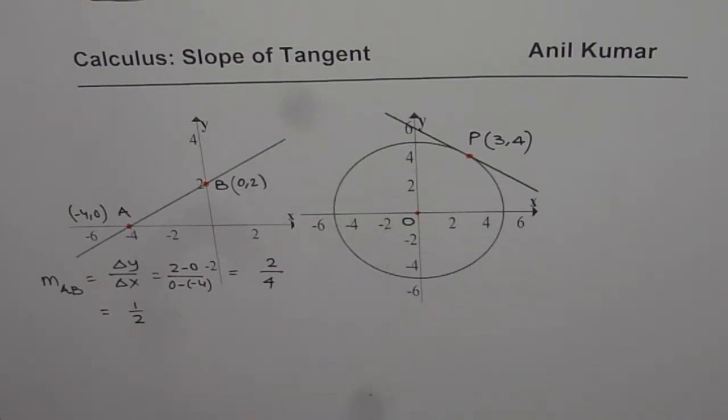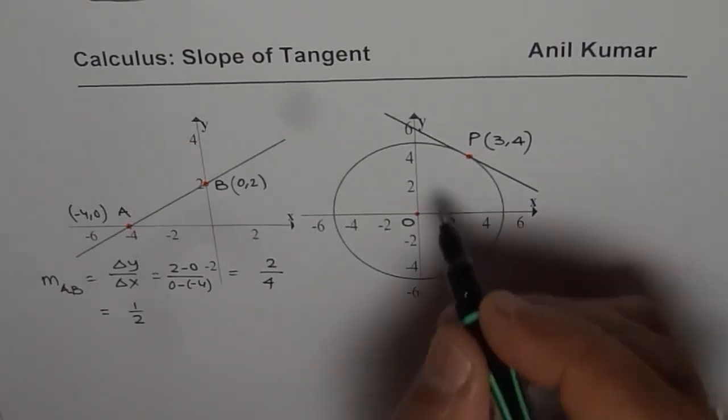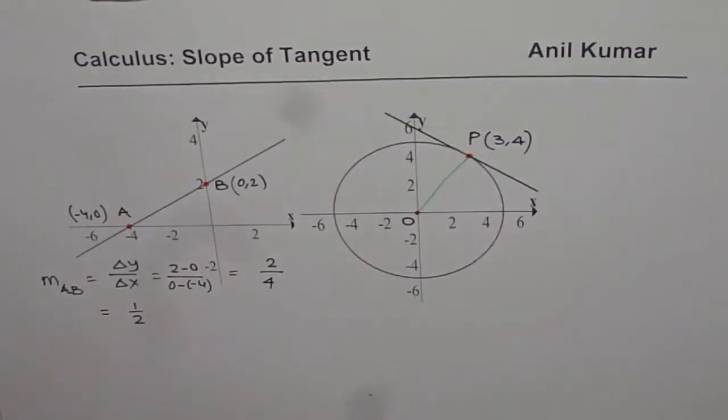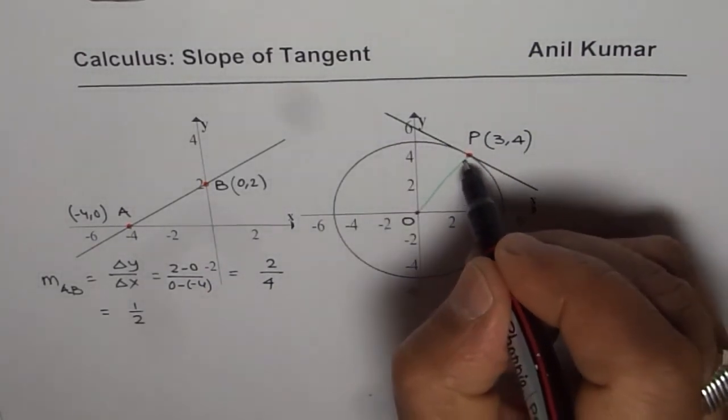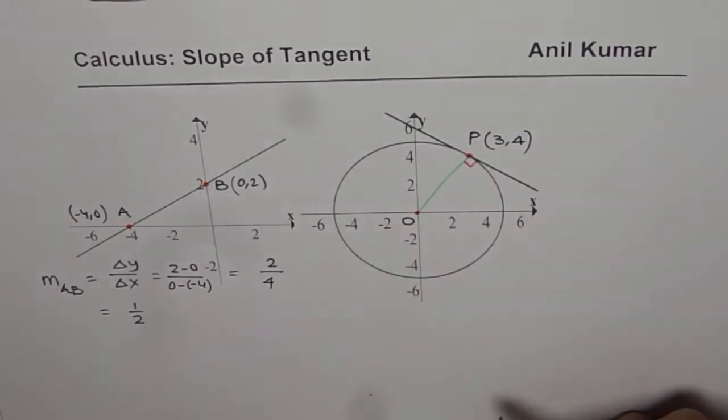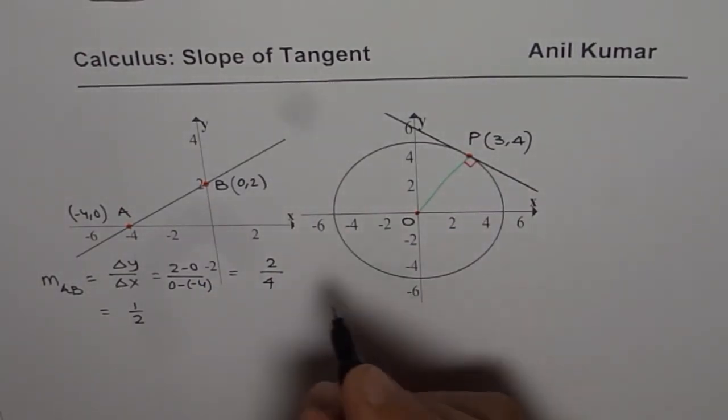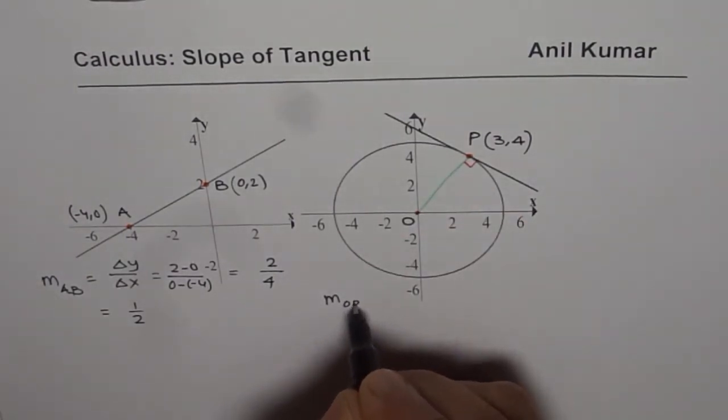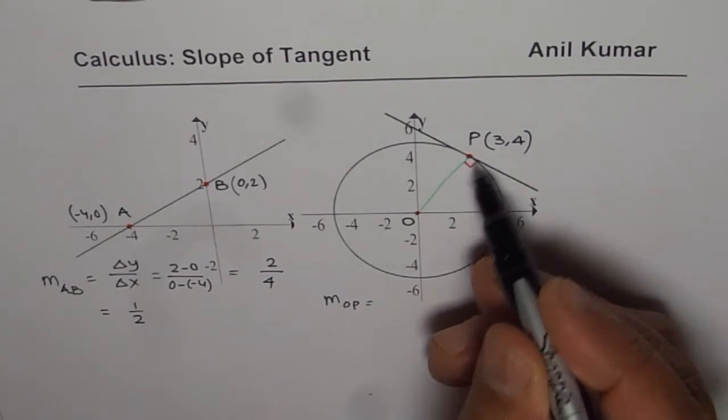Well here we can adopt a strategy. If I join O with P, then since OP is radius and we are given a tangent, these two are at right angles. So the strategy here is find slope of the line OP. We are given effectively 2 points.